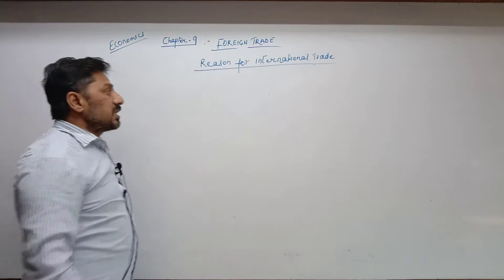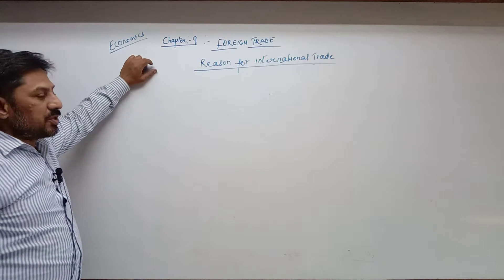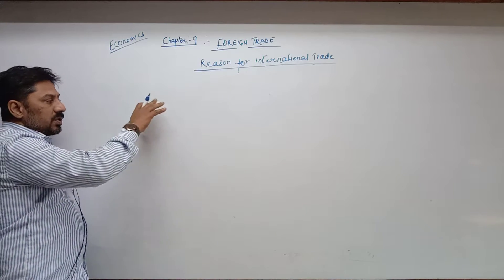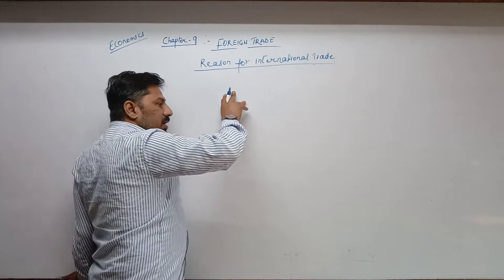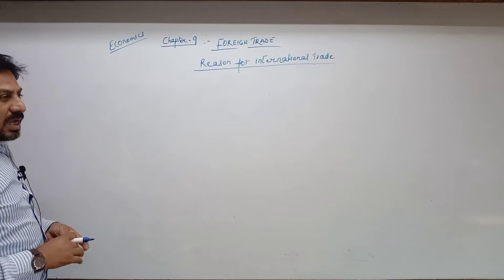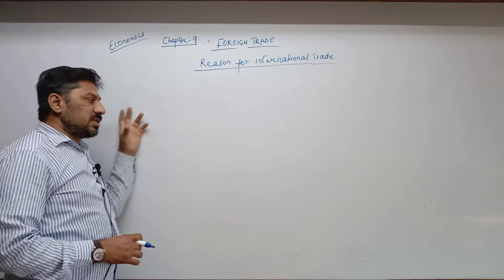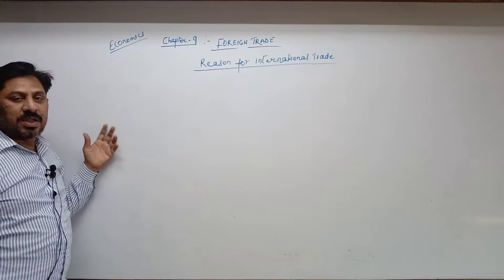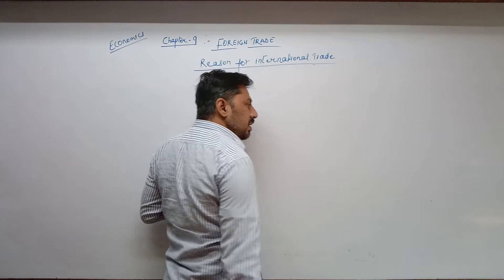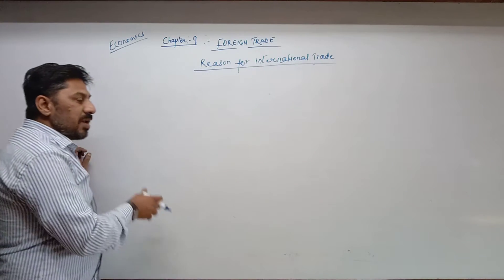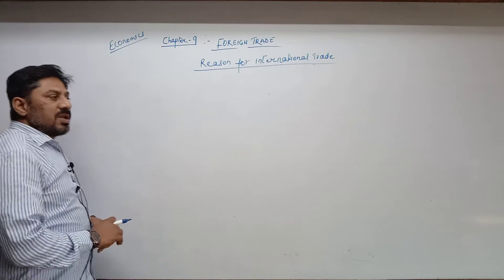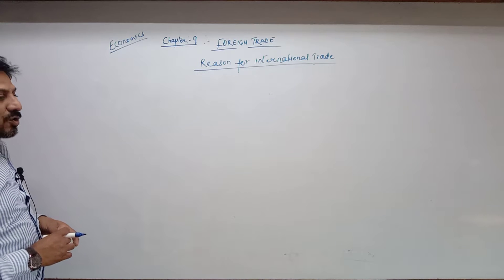Why are we establishing trade relations with other countries? We all know that all countries are not equally efficient. Some countries are advanced in technology, in some countries natural resources are available in abundant quantity, in some countries labor is available in abundant quantity. For example, China and Japan are very advanced in the electronic field.